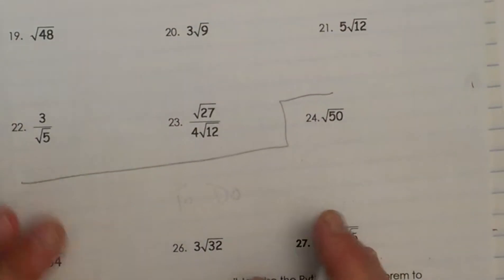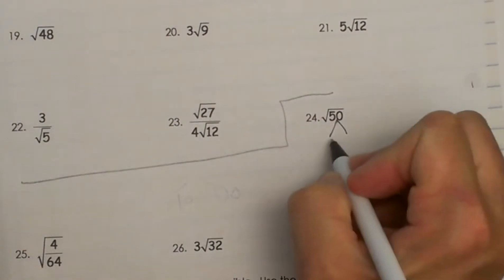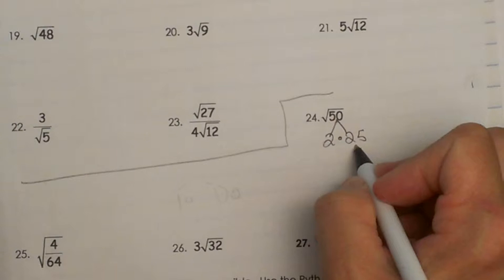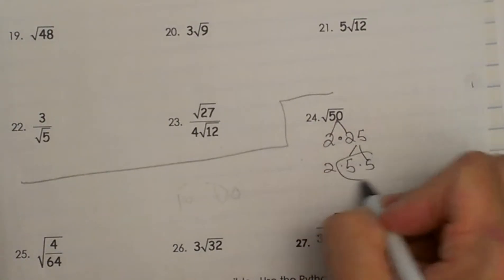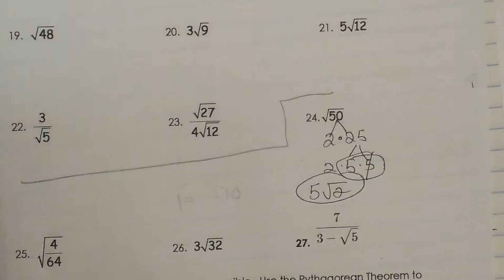So number 24, the square root of 50. What is the process? We do a factor tree: 2 times 25, and then 25 breaks down to 5 times 5. We have a pair, so the pair comes out, and we have 5 square root of 2. So that is the square root of 50.